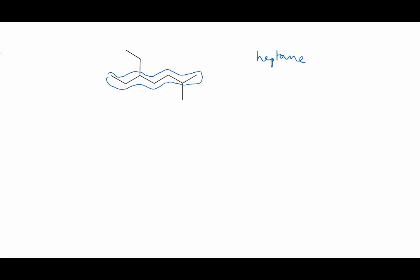Next, identify the substituents. We have an ethyl and a methyl. Number the carbon chain so that we end up with the lowest possible numbers in the name. If we start from the left, the substituents will be on carbons 3 and 6. But if we start from the right, then they're on 2 and 5, so we'll go with that.